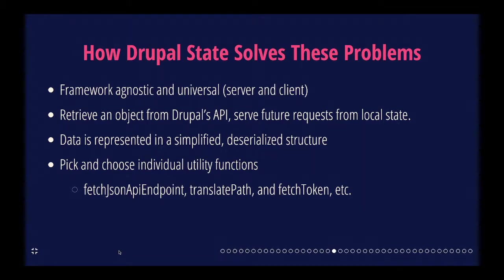Back to Drupal State and how it solves some of these problems. It is framework agnostic — it's vanilla JavaScript, so you can use it with whatever JavaScript framework you want, or no framework at all. It's universal, so it can run on the server and the client. The first request you make to get an object from Drupal will make an API call if it doesn't have that data already, and then it will serve future requests from local state — it caches the response. By default, the response is deserialized and flattened into something a bit simpler.